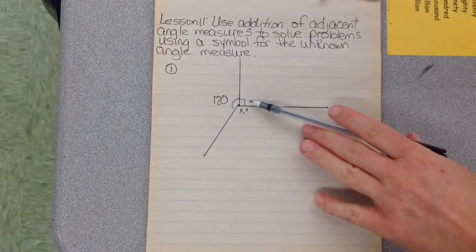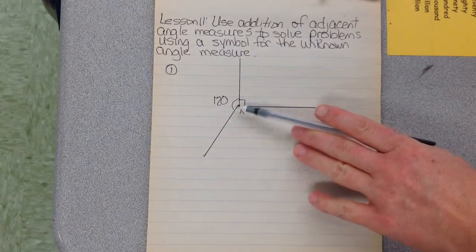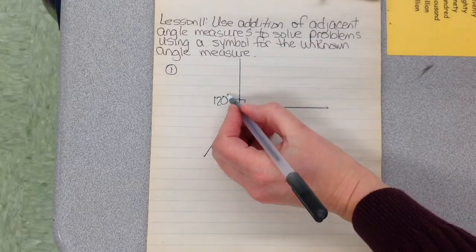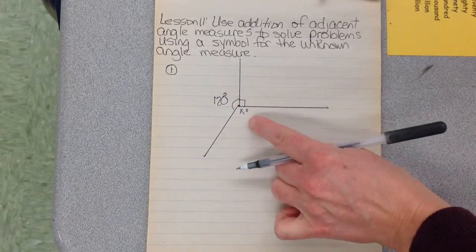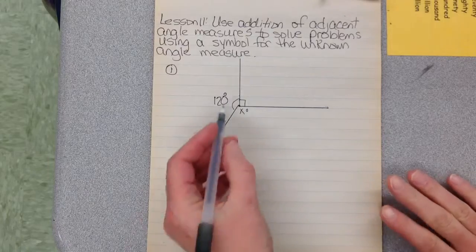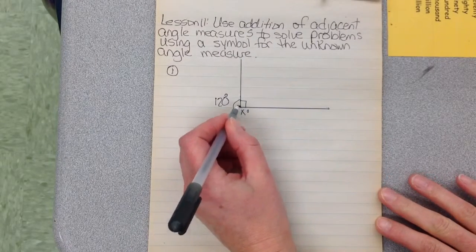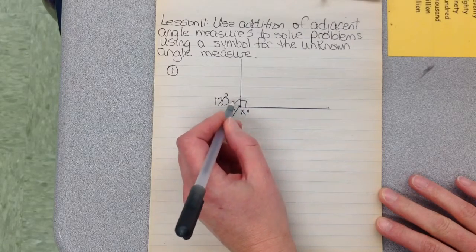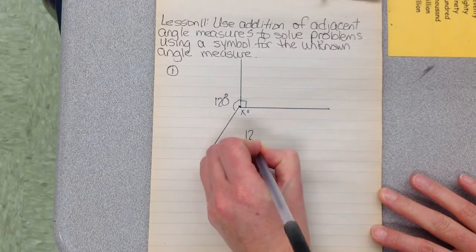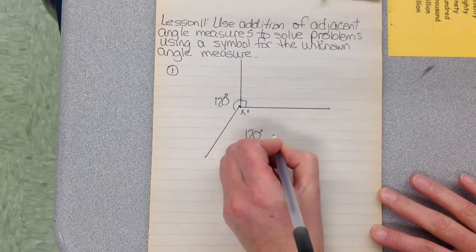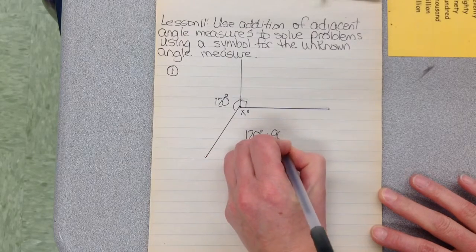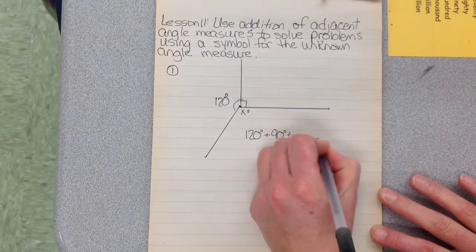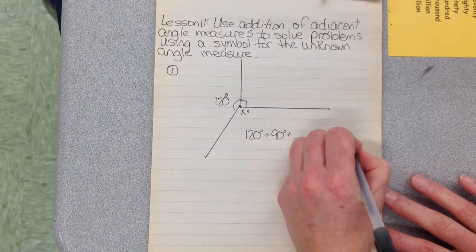We know this angle is 90, this one is 120 degrees. We need to find this one. You notice they all come together at the vertex. This is 360 degrees, together they make a circle. So 120 degrees plus 90 plus something is going to give us 360 degrees.